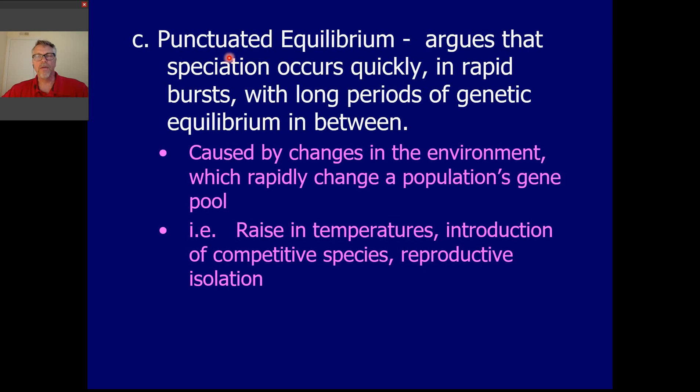Now both, sorry, the evidence that we have supports both punctuated equilibrium and gradualism. So basically both of these things occur at the same time. Both are true. You'll see punctuated equilibrium examples in the fossil record, and you'll also see gradualism examples in the fossil record. So there's not a right answer. They're both true.